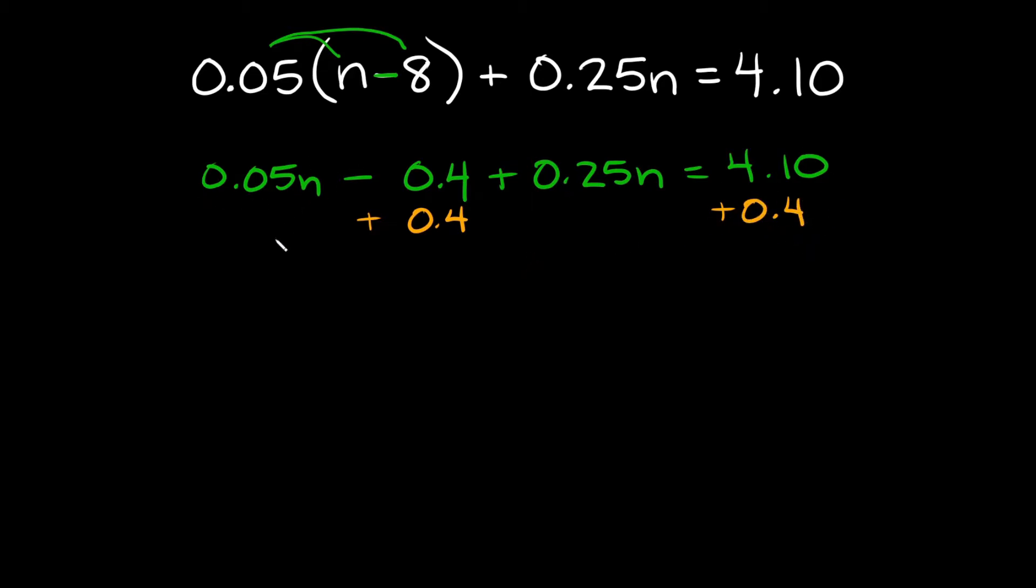Now simplifying on this side we're just going to be left with 0.05n and then this minus 0.4 plus 0.4 that just goes to zero. So then we just have plus 0.25n and that's going to be equal to 4.10 plus 0.4 which is equal to 4.50.